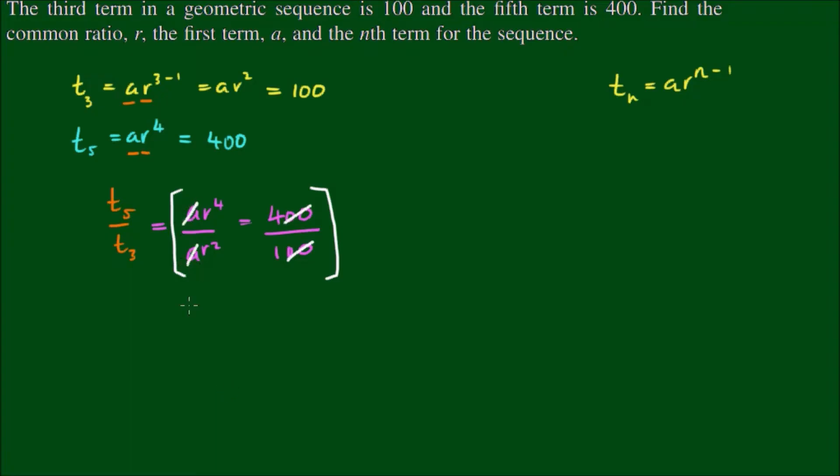I can cancel two zeros straight away on the right hand side. An a cancels with an a and that simplifies down to r squared equals 4, which means that r, if we take the square root of 4, has two possible values: positive or negative 2.